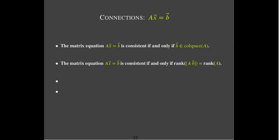As a direct result, the system is consistent if and only if the rank of the augmented matrix is the same as the rank of the coefficient matrix. If it's consistent, B is a linear combination of the columns of A, so it adds no new direction information to the augmented matrix that isn't already in the columns of A.